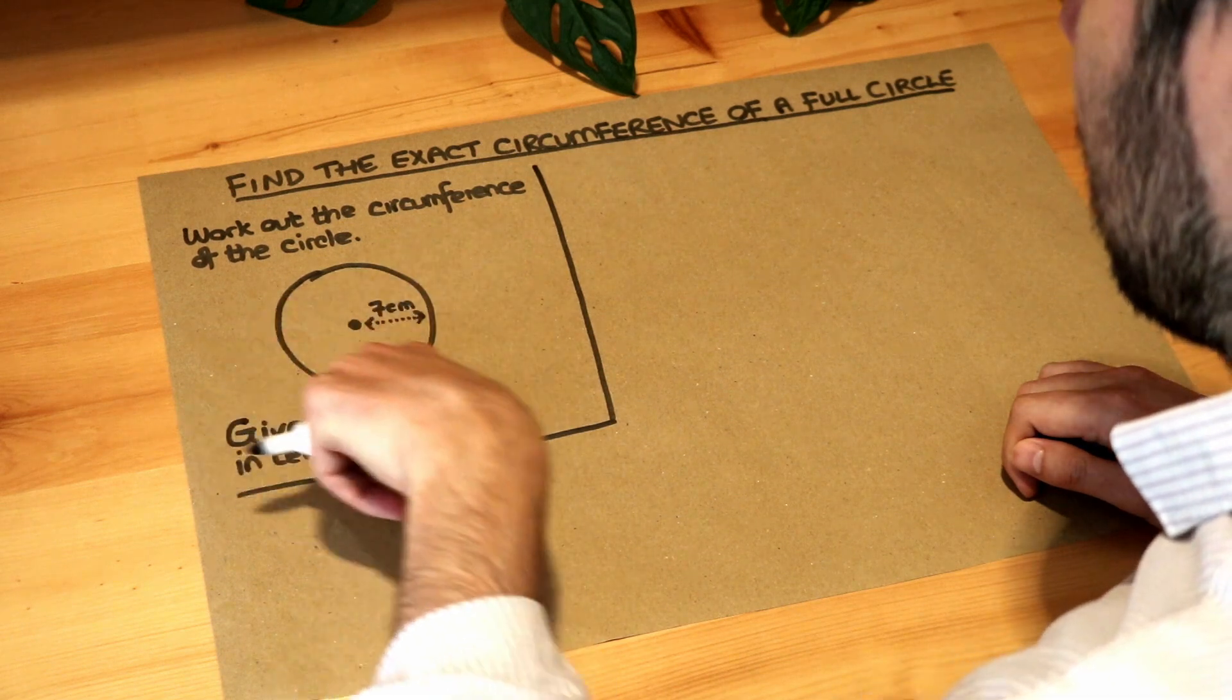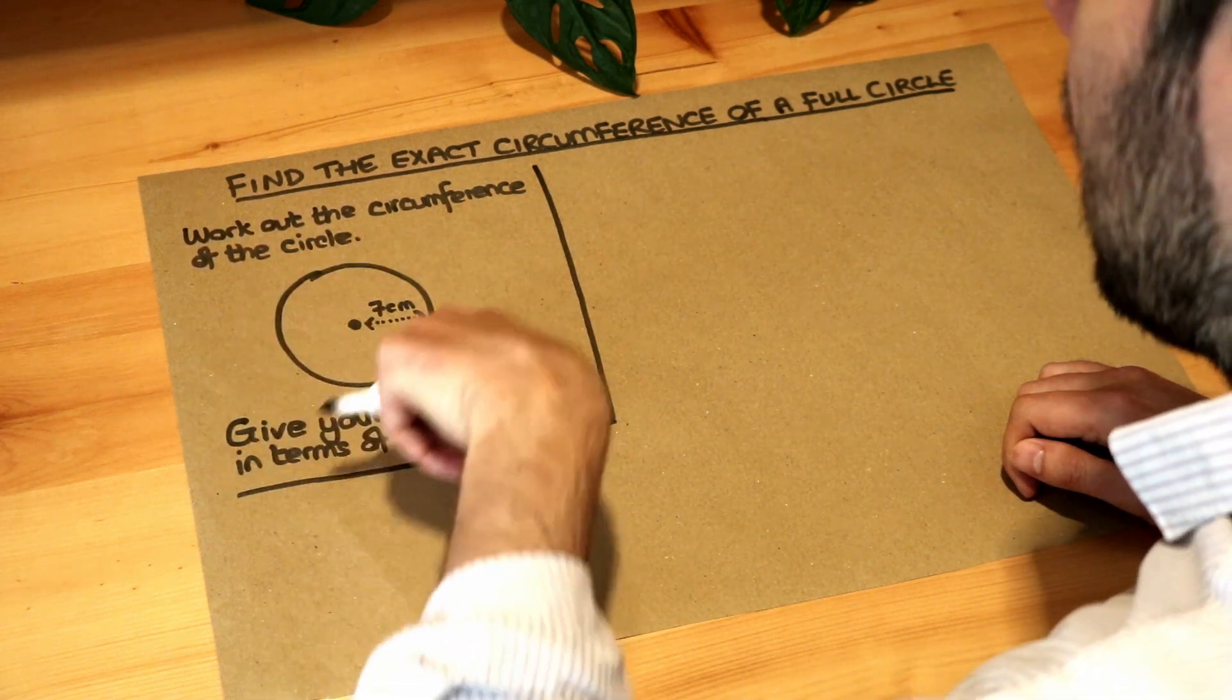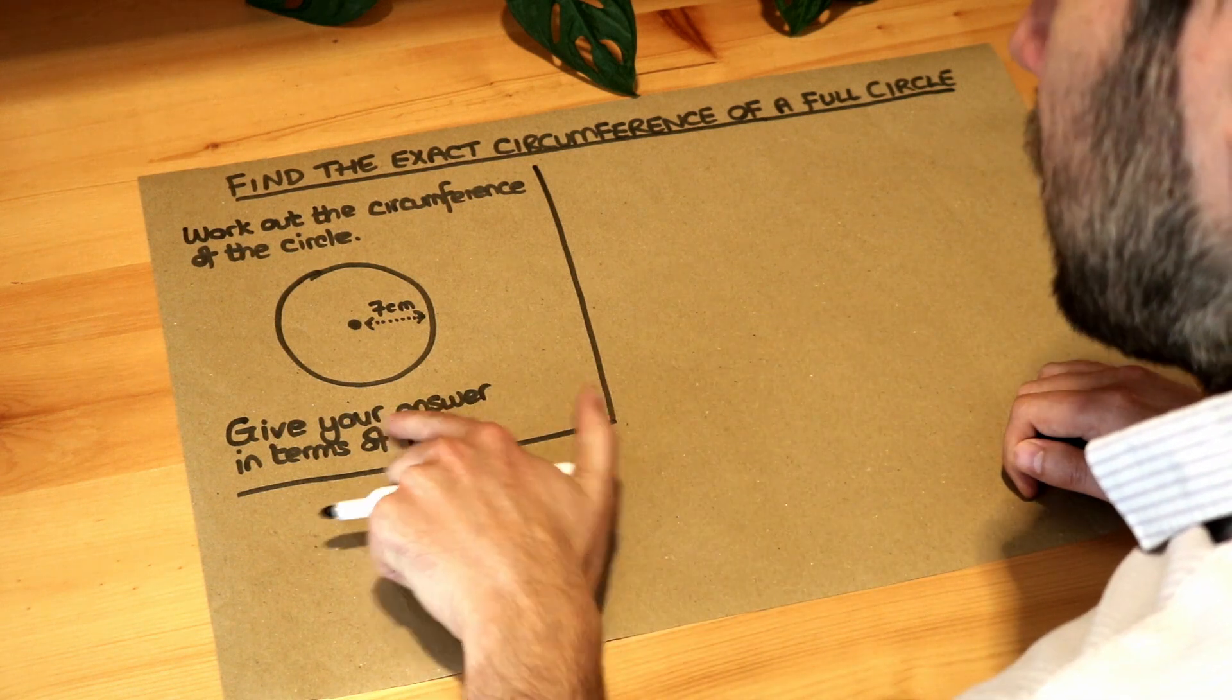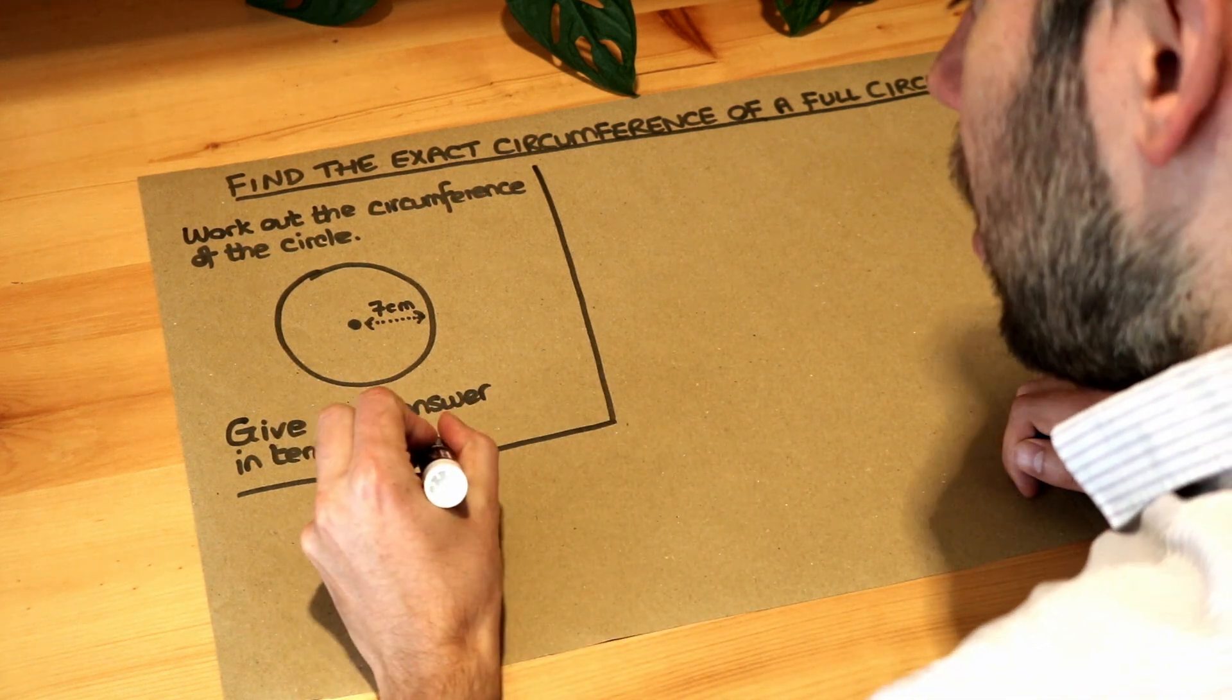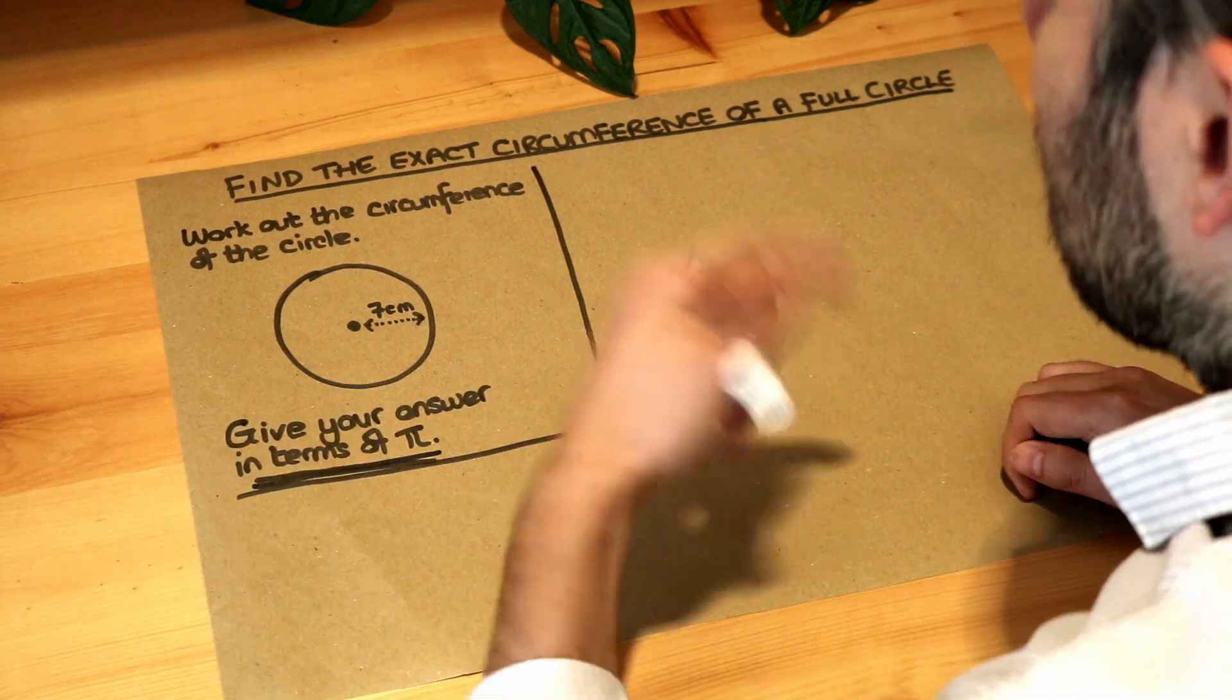Remember the circumference of a circle is just the perimeter of a circle, the length of the perimeter. And we want to give our answer in terms of pi. So that's a new thing here.